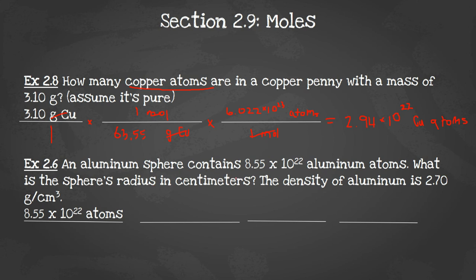Last problem. An aluminum sphere contains this many atoms of aluminum. So we're going to write our given in atoms, aluminum atoms. What is the sphere's radius in centimeters? And it gives us the density. That is a hard one. I can see centimeters cubed. That's a volume. And volume is related to radius. So I can kind of see the path that we're going to take. We're starting with atoms. If we get to grams, we can change that from grams to a volume. And then we can use the volume at the end to find the radius.